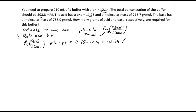To get rid of the log, we raise both sides to the power of 10. So 10 to the power of log(acid/base) equals 10 to the power of negative 0.39. According to the rules of logarithms and exponents, the 10 and log cancel out, leaving us with the acid-to-base ratio equal to 10 to the power of negative 0.39.